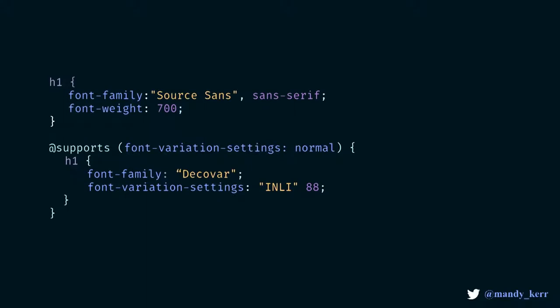If you need to support older browsers, we can make use of CSS feature detection to check whether variable fonts are supported. If they are, we can load in the styles we need for our font, and then we just use our standard fonts as our fallback. The fonts won't look the same, but that's okay — we don't have to have everything looking the same in all browsers all the time. CSS feature detection makes this really easy.